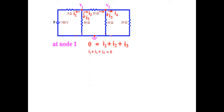For ease we can just change the side — we bring all this on the left hand side and 0 on the right hand side. And at node 2, one current is entering and two currents are leaving: so I2 is entering, and I4 and I5 leaving. So our KCL equation becomes I2 is equal to I4 plus I5.